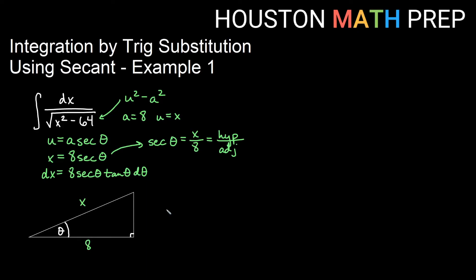And if I want to figure out this other side, then this thing squared plus this thing squared would give me this thing squared. And this one ends up being the square root of x squared minus 64.